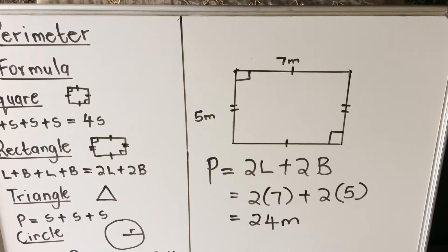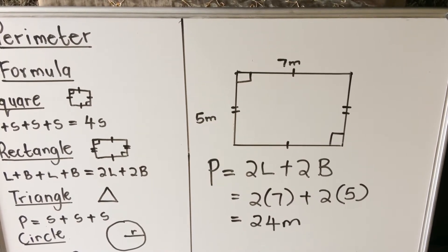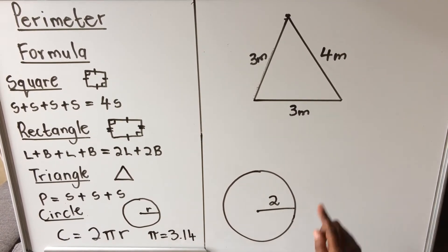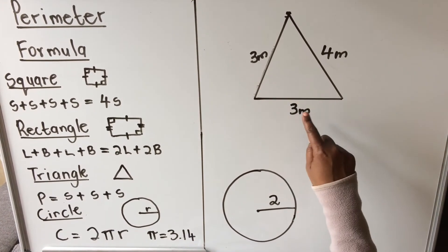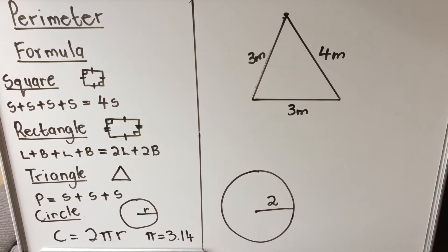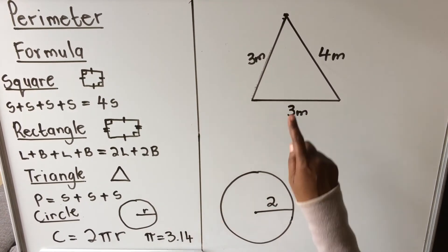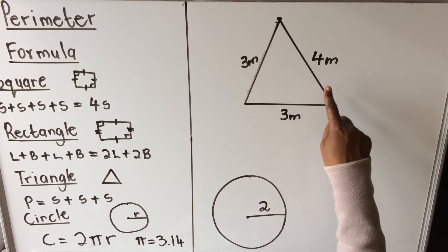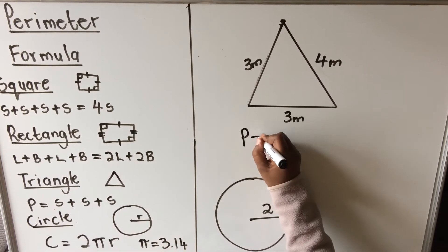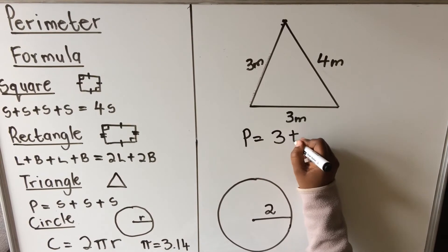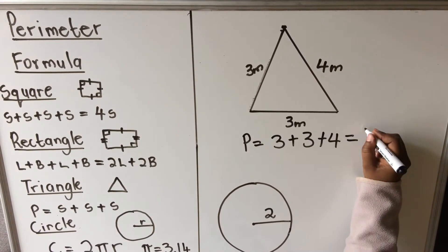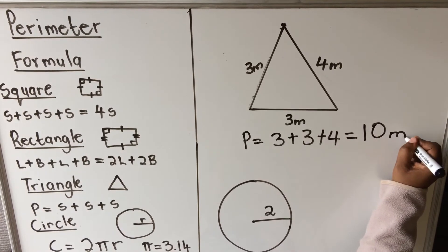Our second example is a triangle. Looking at this triangle, this side equals that side. The perimeter is the distance around the triangle, so perimeter equals three plus three plus four, which means the perimeter is 10 meters.